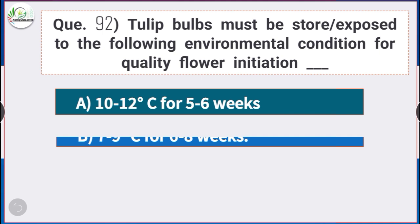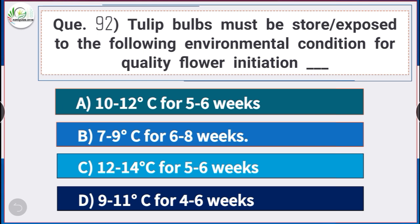Question number 92: Tulip bulbs must be stored or exposed to the following environmental condition for quality flower initiation — answer option B — 7 to 9 degrees Celsius for 6 to 8 weeks. For quality flower initiation, tulip bulbs are exposed to 7 to 9 degrees Celsius for 6 to 8 weeks.